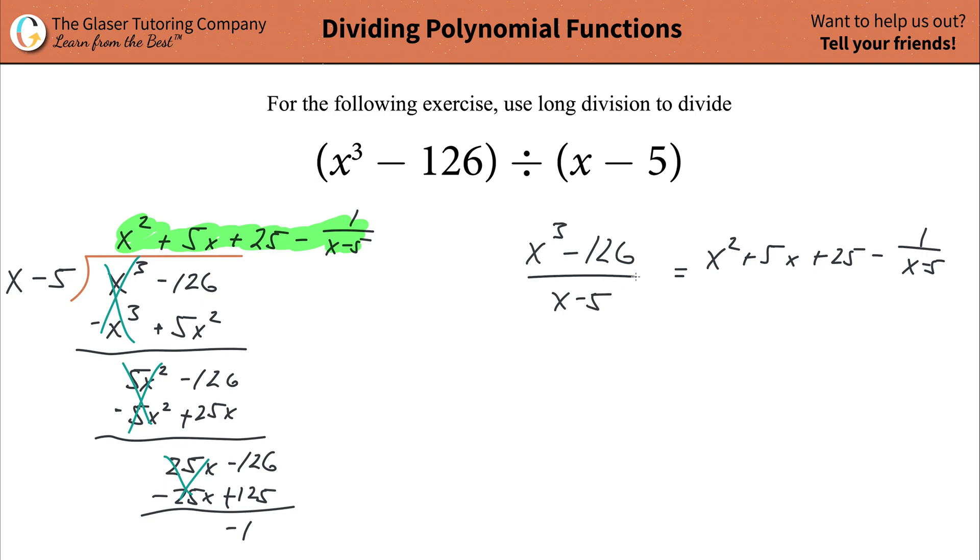So what we now can do is select any x value you like. I'm going to choose one that might make the math here a little bit easier, but you're really free to choose any number you want except for five. The reason why five minus five will be zero, this whole denominator goes to zero, and that's just going to be undefined. So maybe, why don't we choose one close to that, maybe x is equal to positive four. So you're going to have four cubed minus then 126, all divided by four minus five, and that should equal now four squared plus five times four plus 25 minus now one over four minus five.